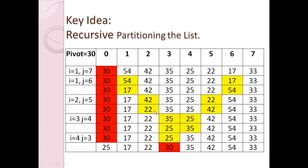We repeat the process: i moves ahead and stops at i equals three because that element is greater than the pivot. From the right, j is searching for a smaller element and stops at j equals four, where 25 is smaller than the pivot. We swap these two elements.